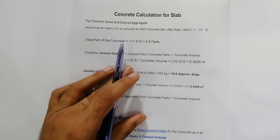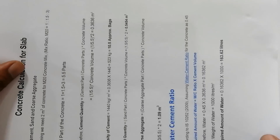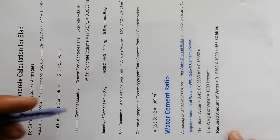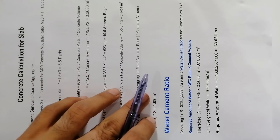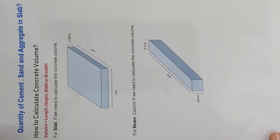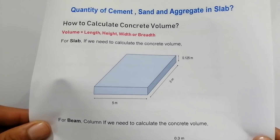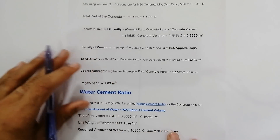This is the method to find how to calculate the quantity of concrete for beam, column, and slab, including the water-cement ratio. You can make a screenshot of this concrete calculation summary for RCC slab — cement, sand, and coarse aggregate. If you have any questions about this video, comment below and I will try to reply. Thanks for watching, see you in the next video, goodbye!